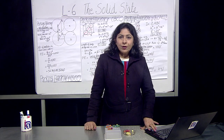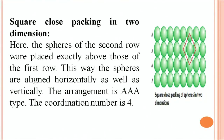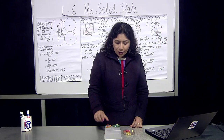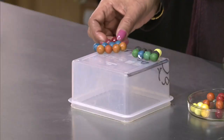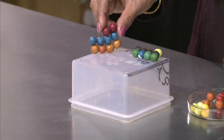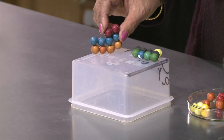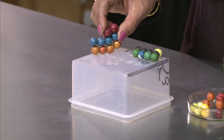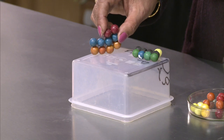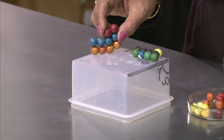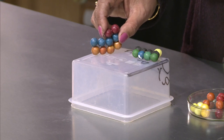In two dimensions, we can have two different patterns. One is atom on atom — you can see in the figure and on the slide also, I have arranged it so that one row is falling on the other atom. The sphere of the second row are placed exactly above those of the first row, so the spheres are aligned horizontally as well as vertically.